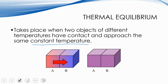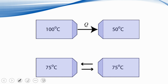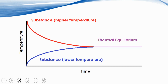That transfer of energy continues until both reach the same temperature — that's thermal equilibrium, the goal of heat exchange. Here again we have 100 and 50, with q representing heat flowing from the block of 100 to the block of 50. The two arrows pointing both ways at the bottom represent that equilibrium has been achieved. We can also represent that graphically.